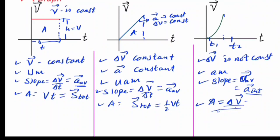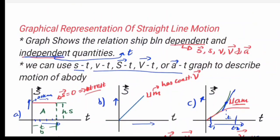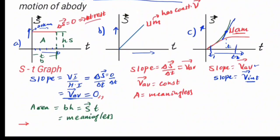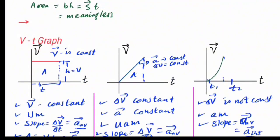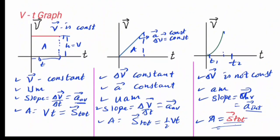To summarize: if you have a velocity versus time graph, the area gives total displacement. For a displacement versus time graph, the area is meaningless, but the slope gives average velocity. For the velocity versus time graph, the slope is the average acceleration, and the area is total displacement. For the acceleration versus time graph, the slope represents change in acceleration over time, and the area represents change in velocity.